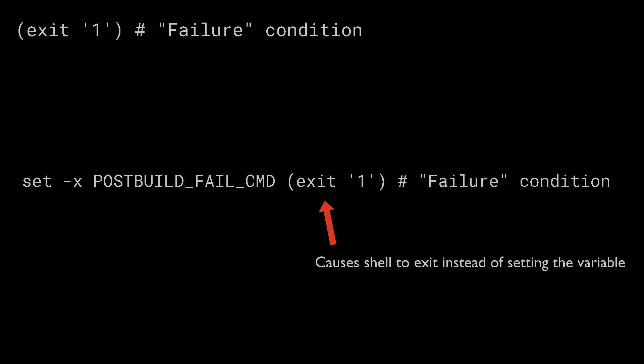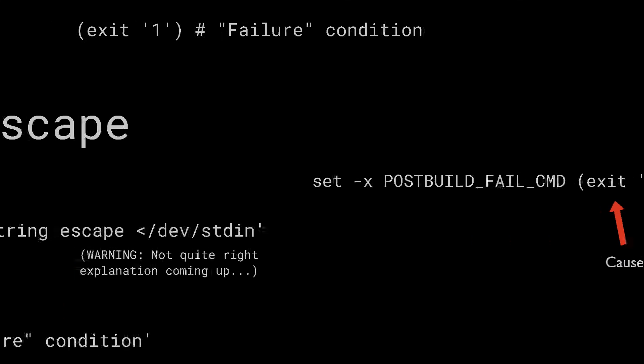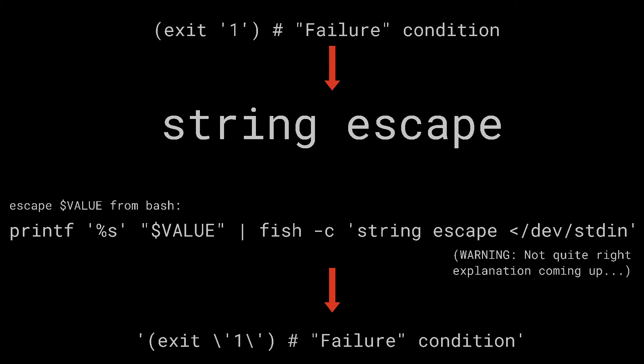Fish has a built-in command for escaping strings for use in fish code — it's called string escape, which makes complete sense. I was using a bash script to diff the two environments and then generate the code for fish to execute. To escape the strings appropriately, I used fish's built-in command, since that would be the most reliable way to escape strings properly. My bash code would run fish with the -c option, which means instead of being an interactive shell, just run this one command and then exit. I tested this out and it worked fine. The changes to the environment from the bash code were replicated in my fish environment.